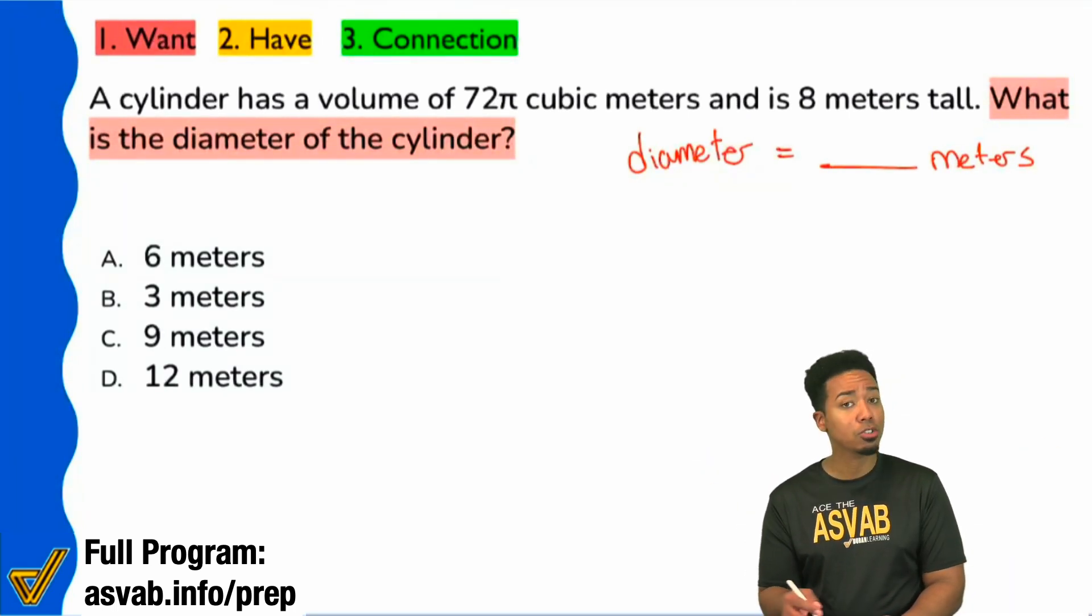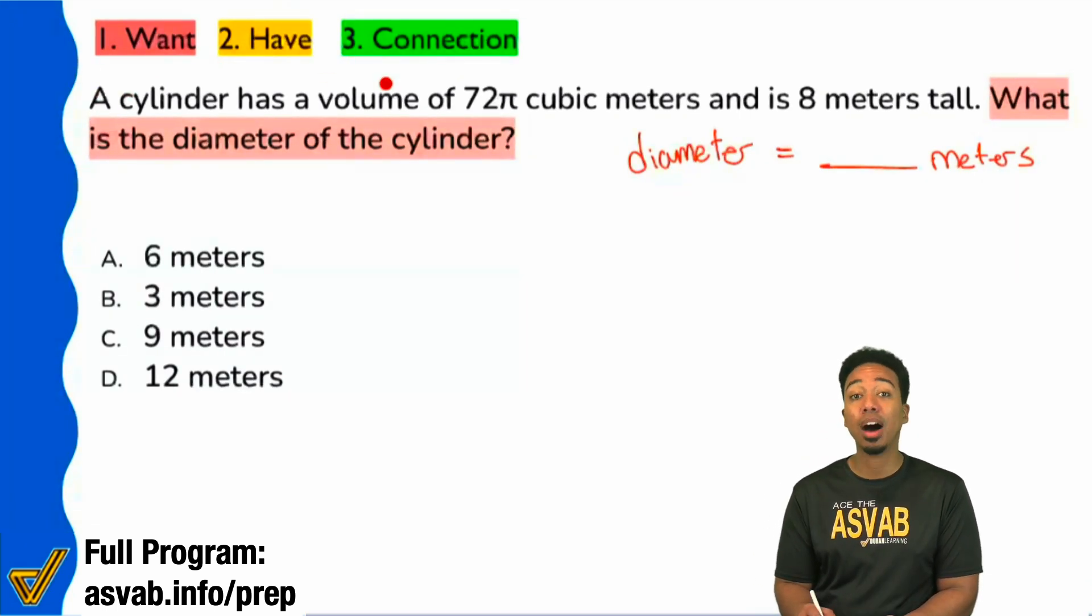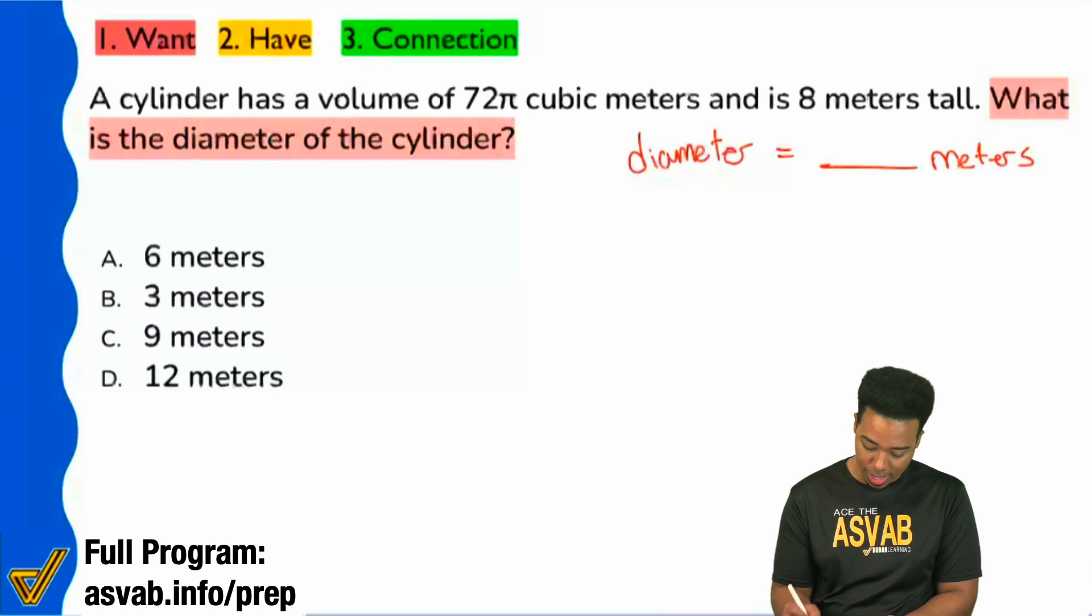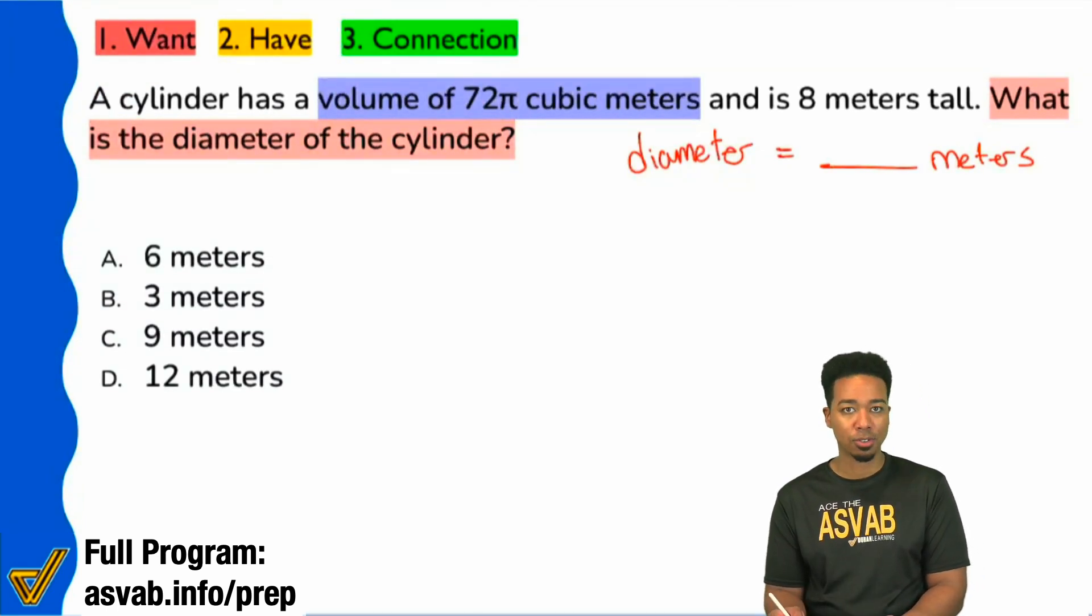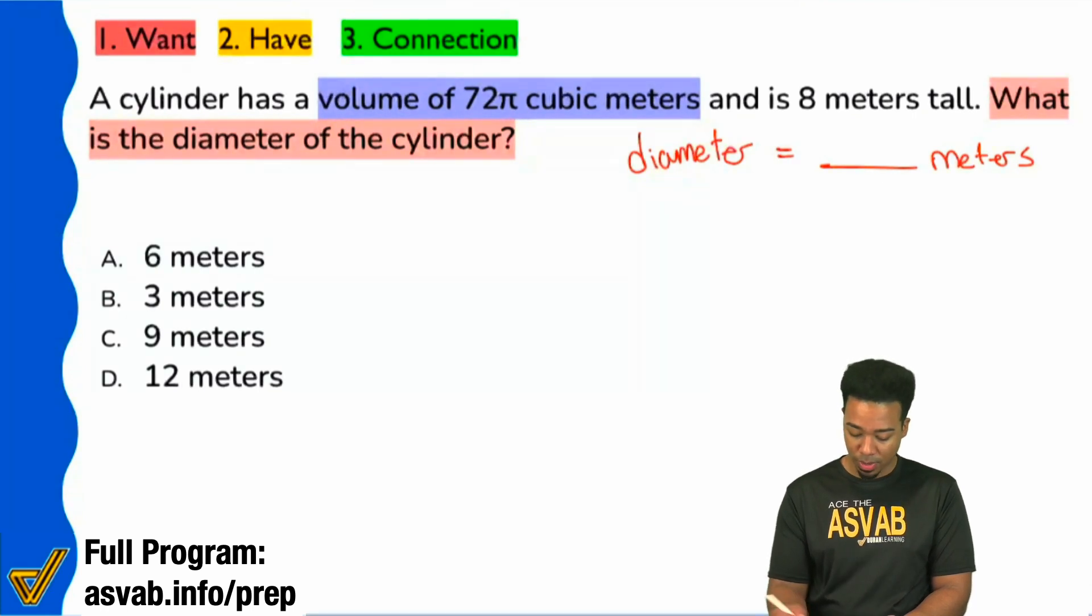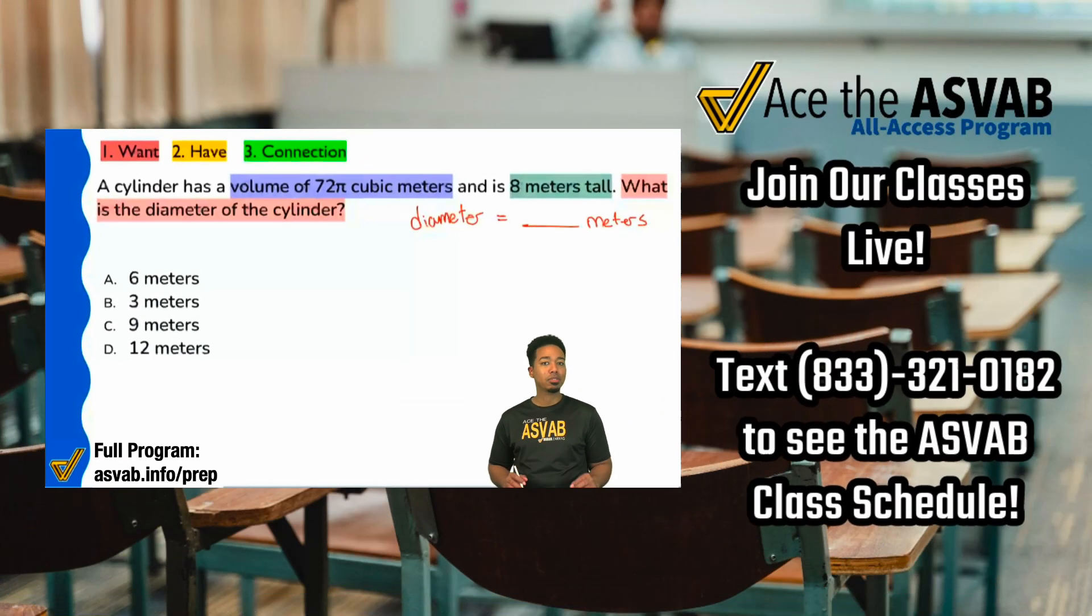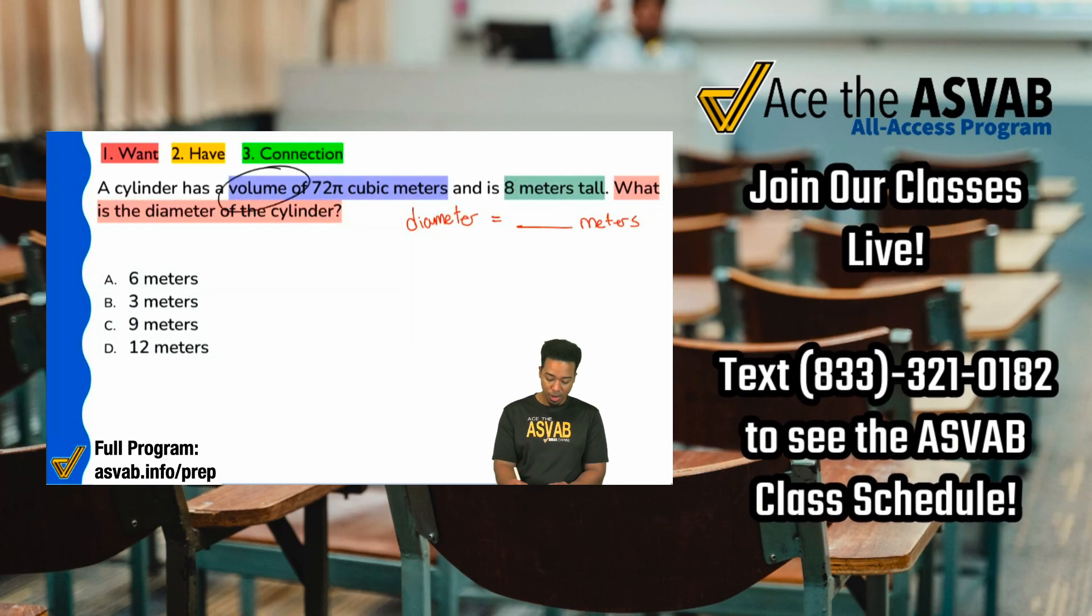Thankfully they use some pretty straightforward terminology. They say that a cylinder has a volume of 72π cubic meters. On top of that, we're given that this cylinder is 8 meters tall. The biggest piece of information here is volume.